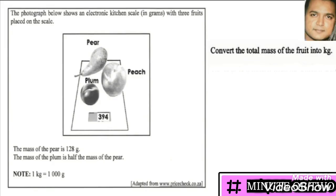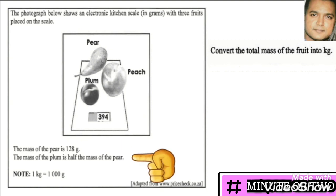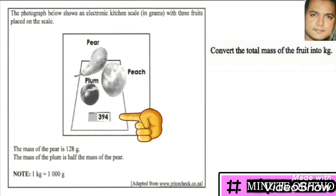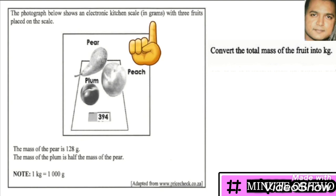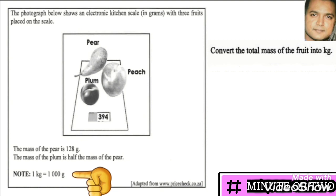In the next question we are presented with a scale with three fruit on it. The pear is 128 grams and the plum is half the mass of the pear. We also find 394 on the scale. The information at the top reflects that this is in grams, and there is a note at the bottom which says 1 kg is equal to 1000 grams.